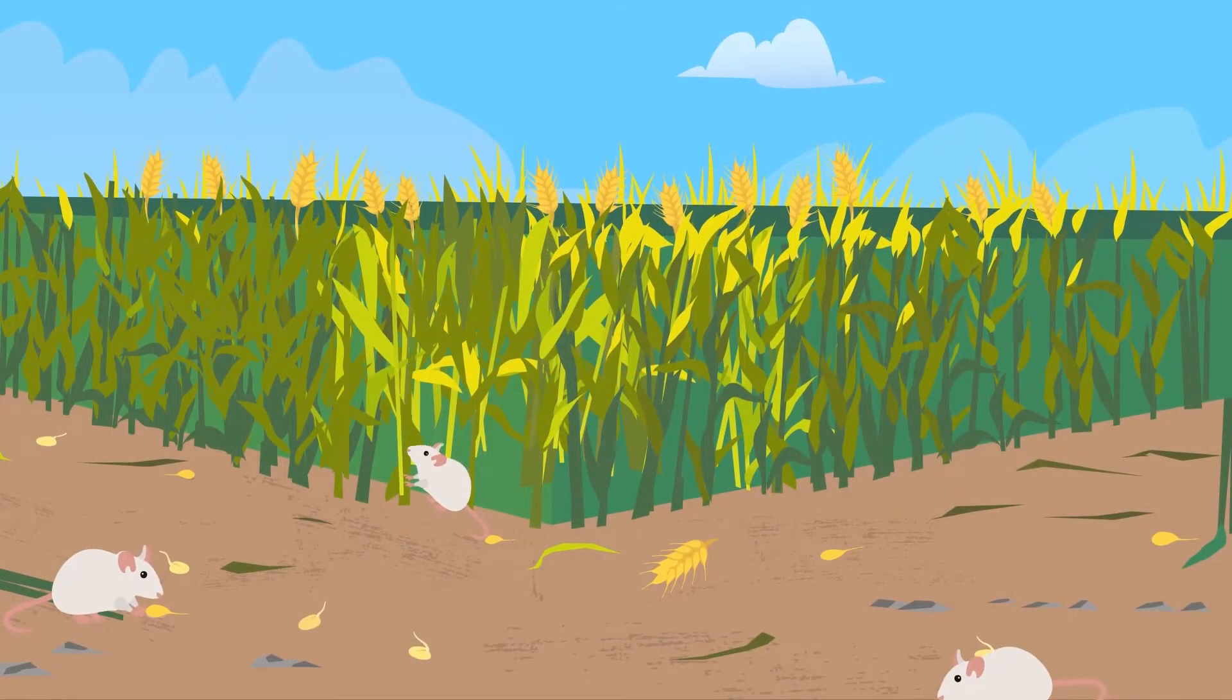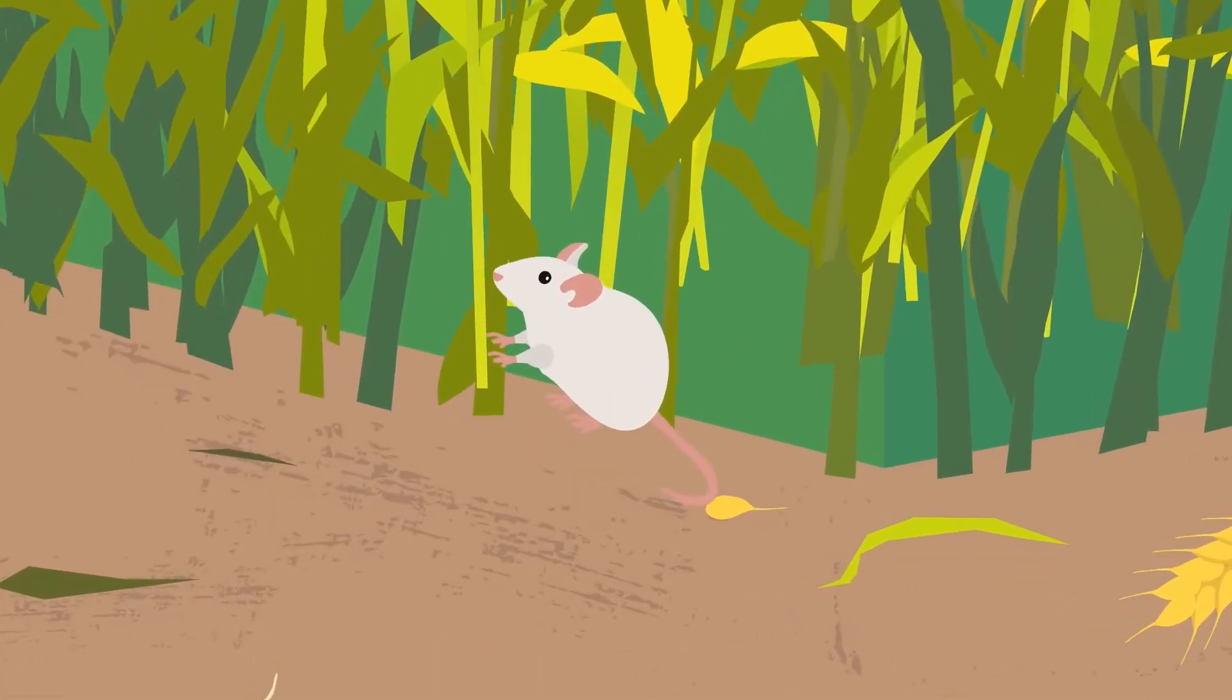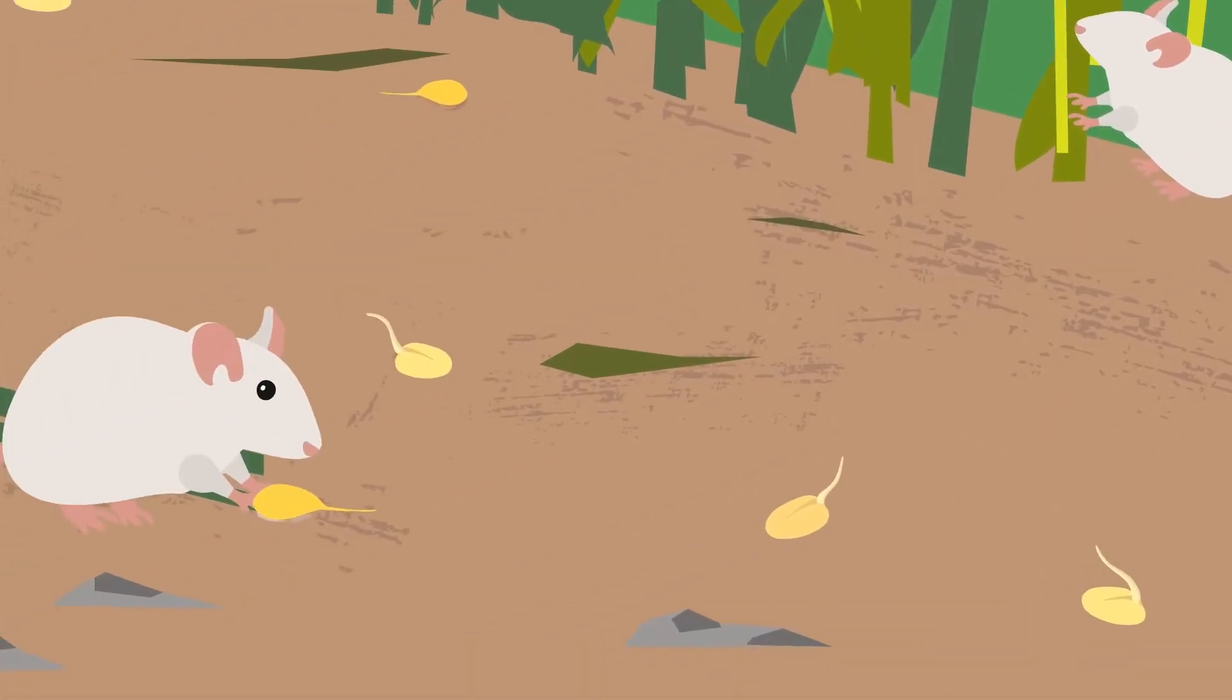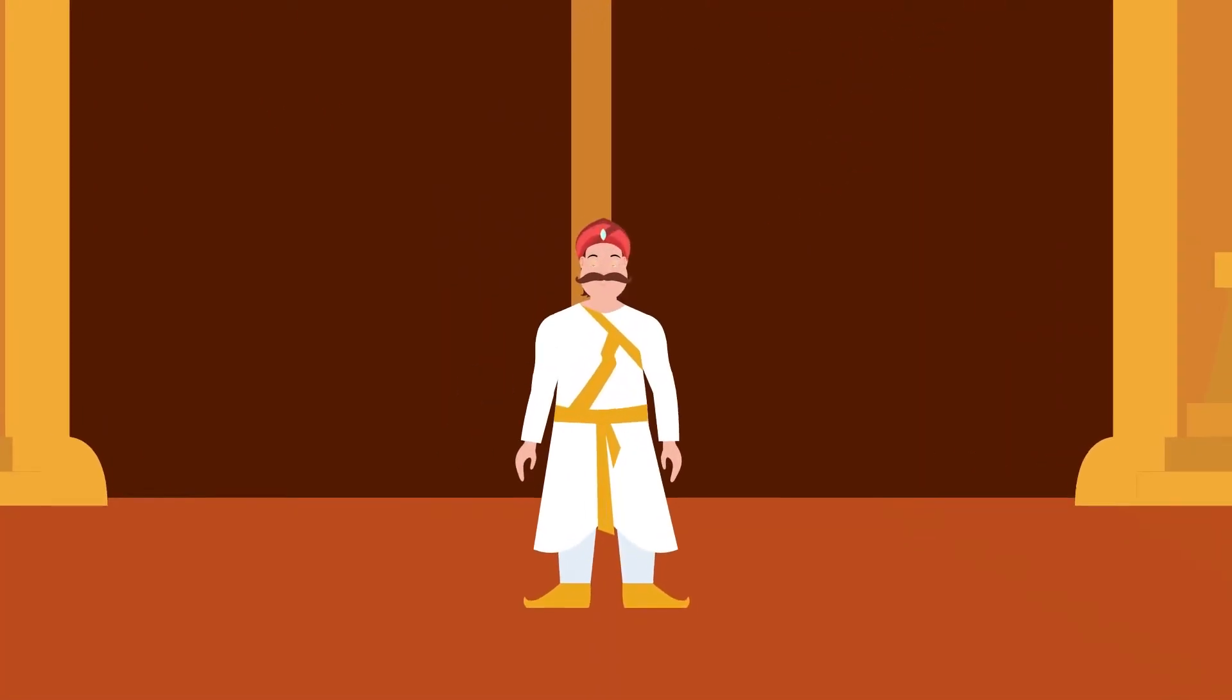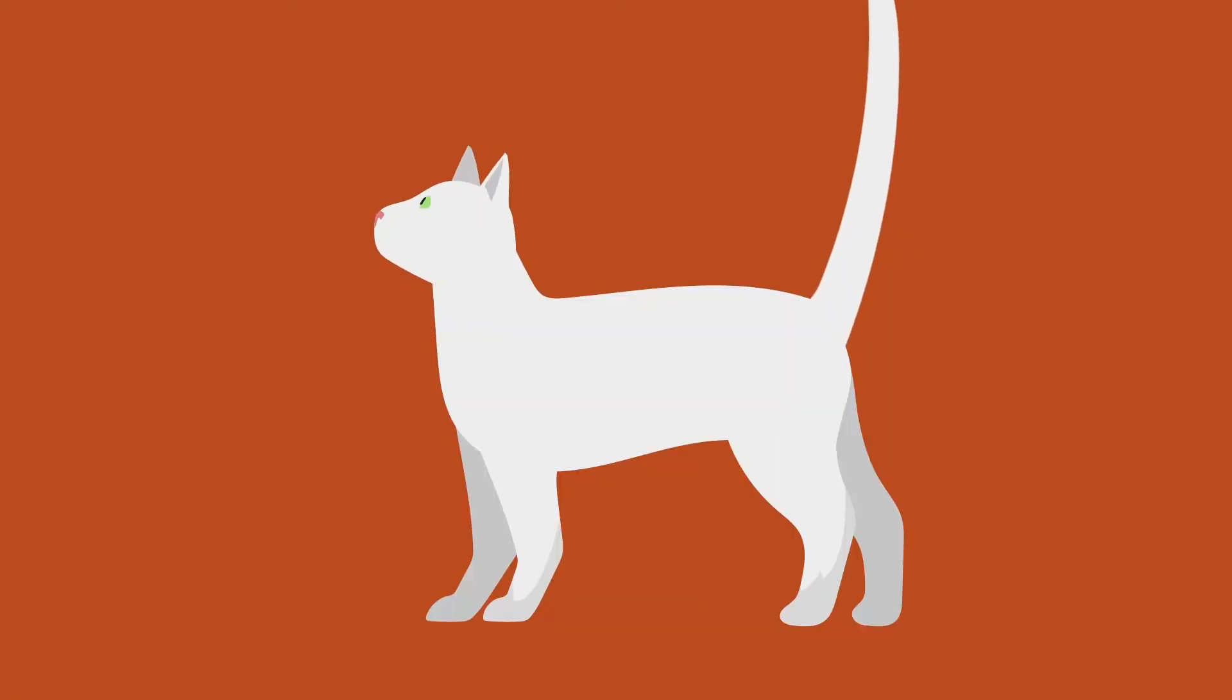Once the kingdom faced a big problem of rats. The rats were pests that would destroy all the crops. So, the king asked everyone in the kingdom to keep a cat to chase away and kill the rats.